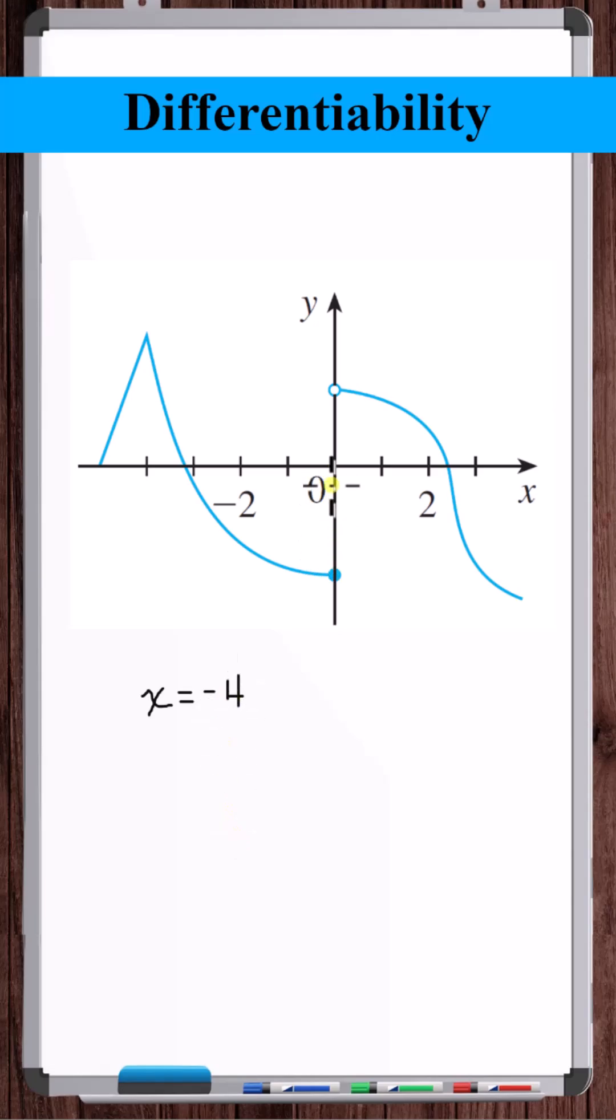What about at x is equal to zero? This is a little tricky because you could potentially say, well, the slope approaching zero from the left is like zero here, right? A horizontal tangent.